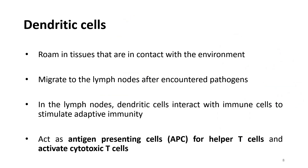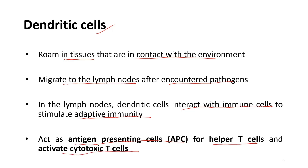Dendritic cells roam in tissues that are in contact with the environment. They are able to migrate to the lymph node after encountering a pathogen. In the lymph node, dendritic cells interact with immune cells to stimulate adaptive immunity, acting as antigen-presenting cells (APCs) that activate helper T cells and cytotoxic T cells.